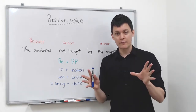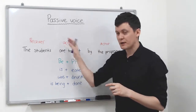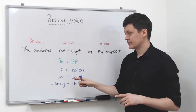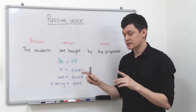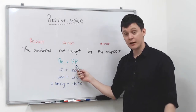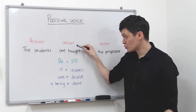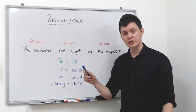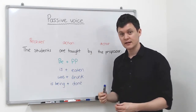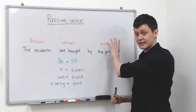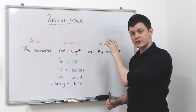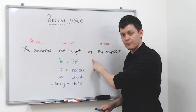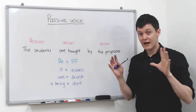Just remember: the first part is easy — you've got the receiver in the subject position. This structure is always going to be B plus past participle, so the past participle is always the same. But this B changes depending on the tense. Finally you've got the actor at the end, and you must introduce the actor with the preposition by. So that's the structure.